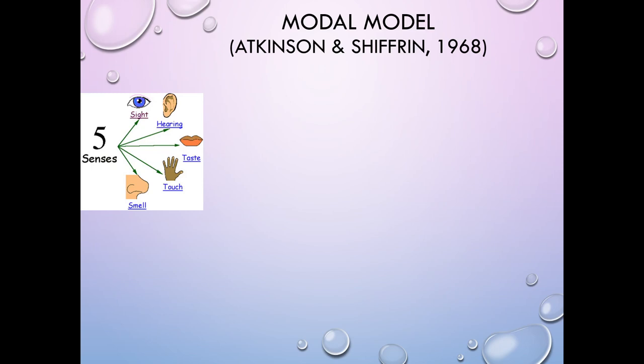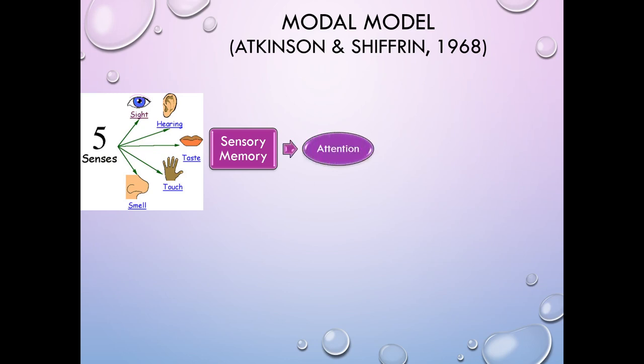Whether you're watching TV, listening to music, or eating dinner, all five senses are going to be activated. You can't pay attention to all of it equally. All of this information lands in sensory memory, where it stays briefly. Then by paying attention — what Atkinson and Shiffrin called encoding — you can move that information out of sensory memory into your short-term memory store.